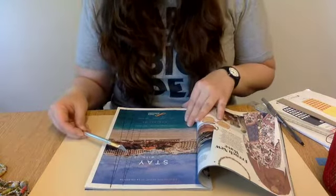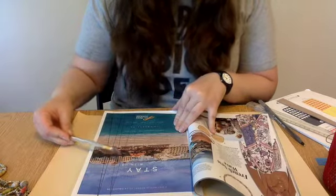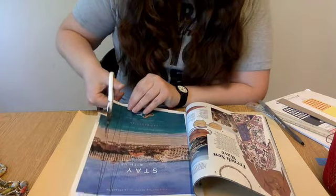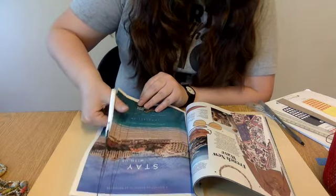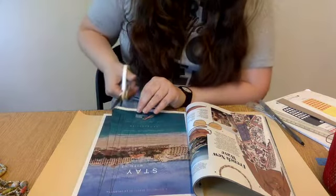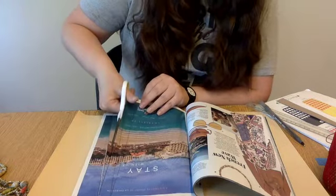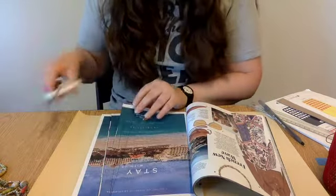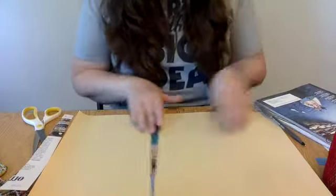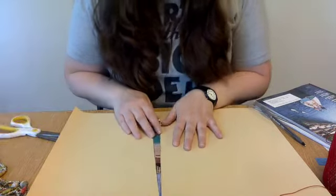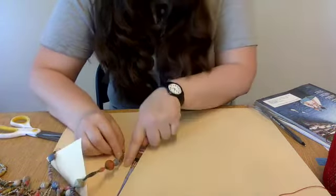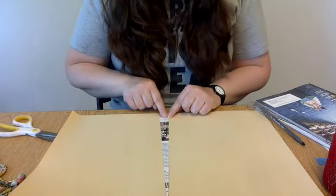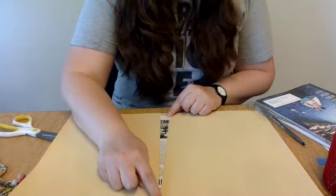So either of those ways will work. Again, if you have an exacto knife at home and you are a responsible person that can use this without hurting yourself, go for it. But I'm going to use some scissors and cut my triangles out. So I have a triangle. Now, if I want these colors to be on the outside of my bead, I'm going to have to flip this triangle over. And notice how the thick or flat part of the triangle is facing me and the point is facing away from me, because I'm going to roll from me to the point.